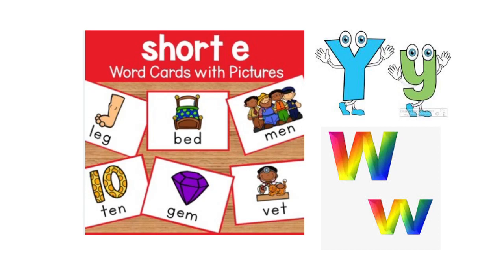Hello everybody and welcome to our lesson. I'm Sawsan and I'm very happy to have you all today. Our lesson is going to be about the short E words and the consonant Y that makes the sound 'yuh,' and the consonant W that makes the sound 'wuh.' So, are you ready to start?